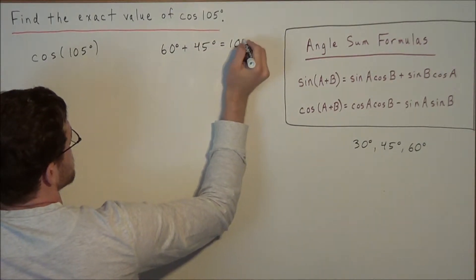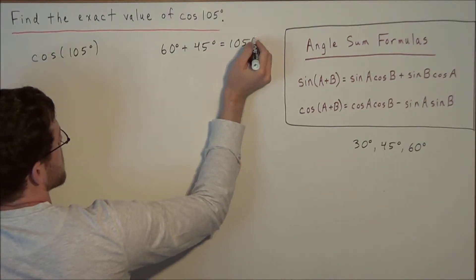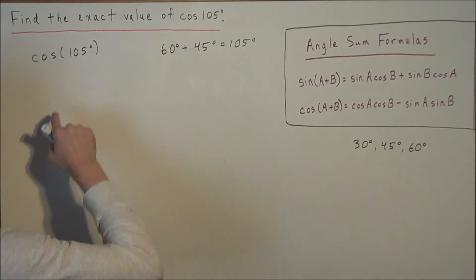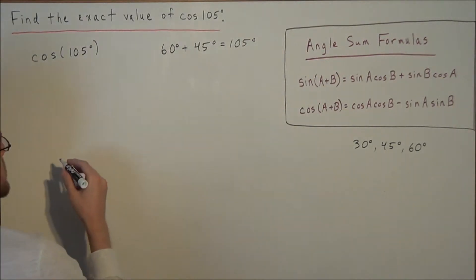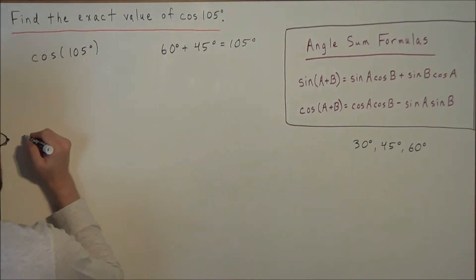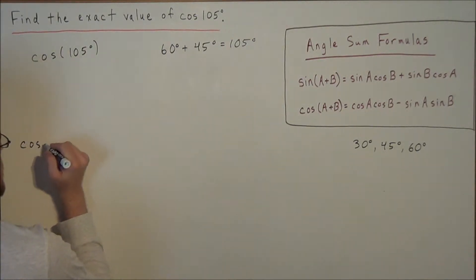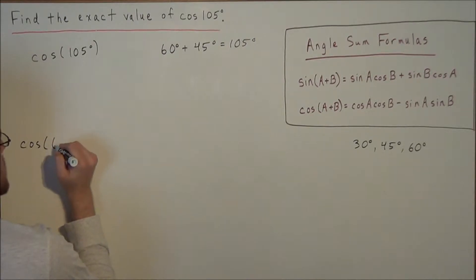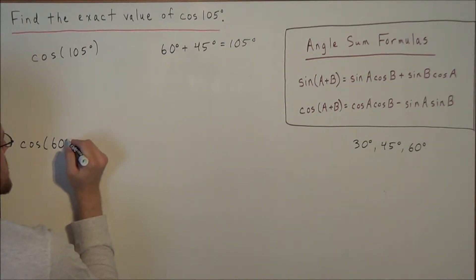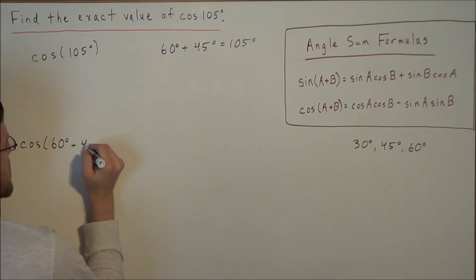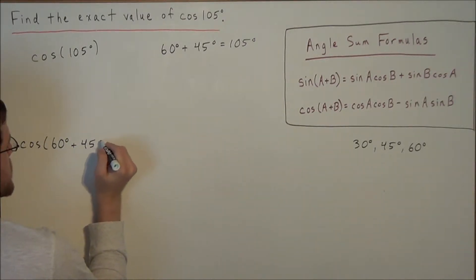So what this allows us to do is we're going to make a substitution for 105 degrees. We're going to call this cosine of 60 degrees plus 45 degrees.